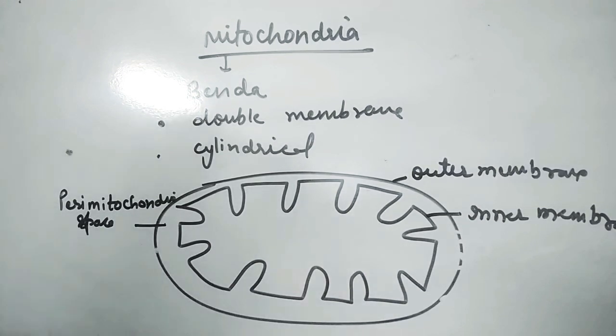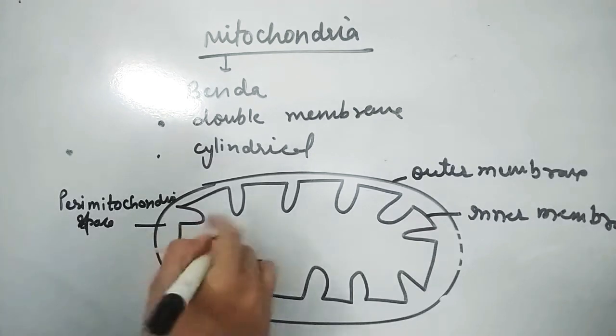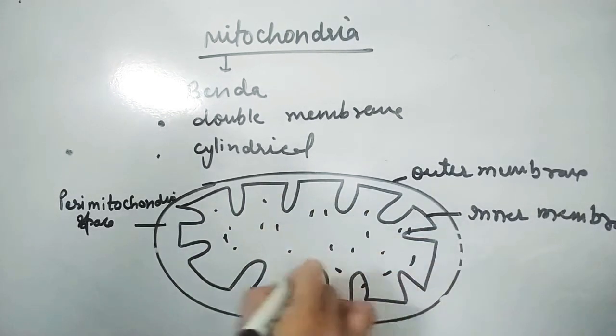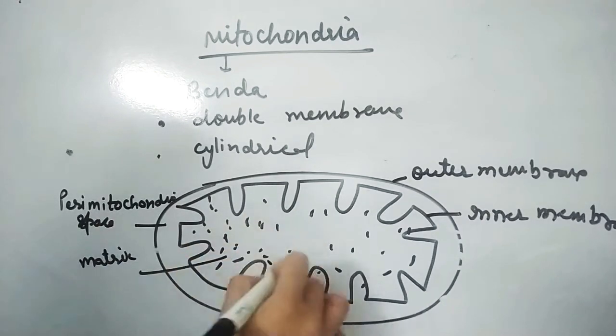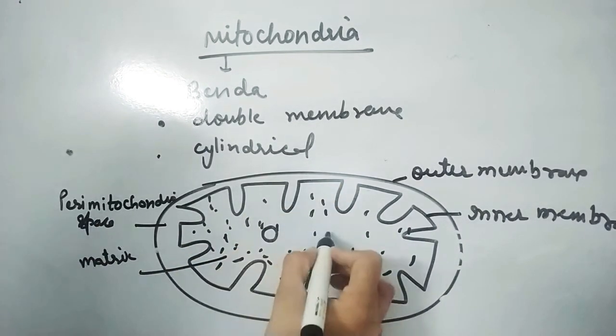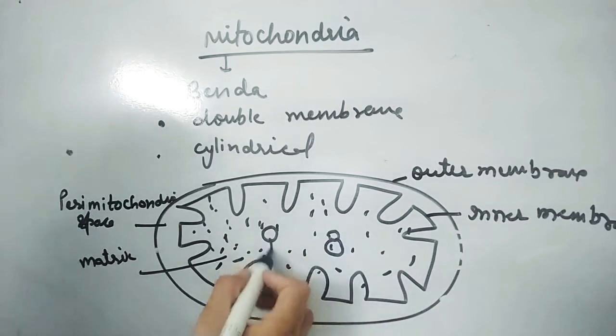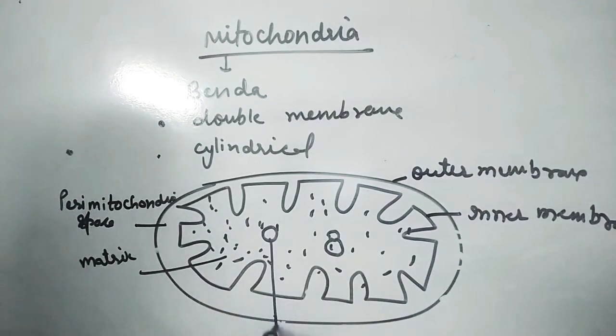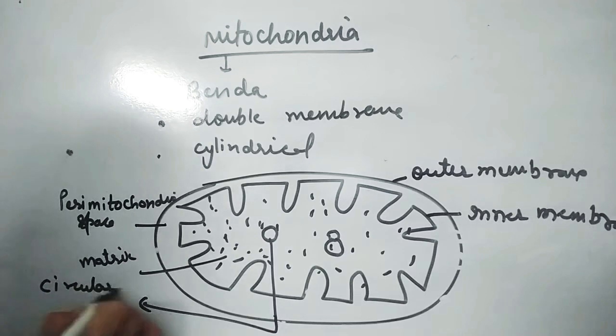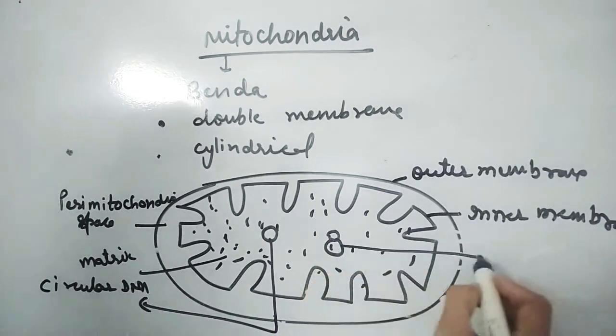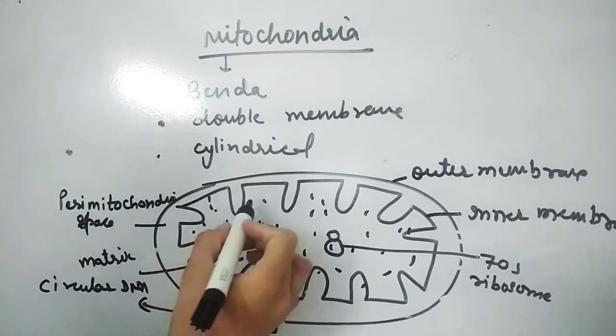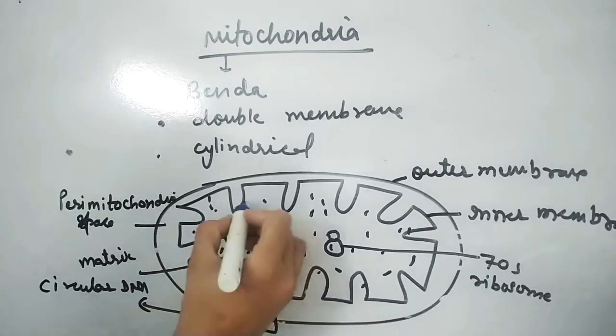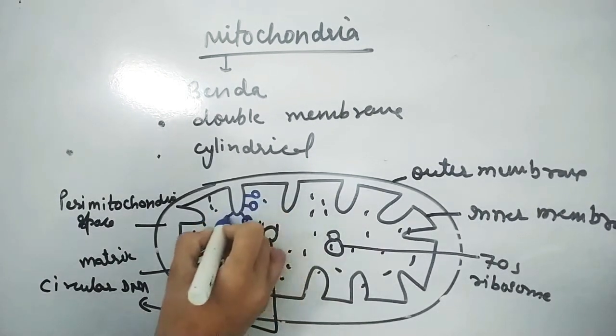The inner space is called the matrix. The matrix contains circular DNA and 70S type of ribosome. There are also granules present in the matrix.